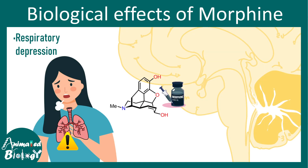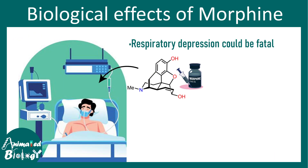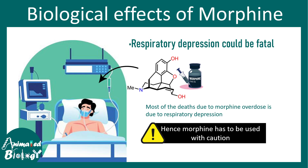Morphine also acts as a respiratory depression agent. This is because morphine acts on a specific region of the brain known as the pre-Bötzinger complex, which is responsible for generating the respiratory rhythm. When this respiratory rhythm generator is inhibited, overall respiration becomes slower and the rhythm is altered. That is why morphine must be used with caution, because at overdose and in cases of abuse, it can lead to respiratory depression, which might be fatal in some patients.